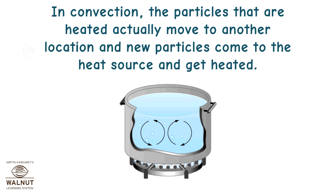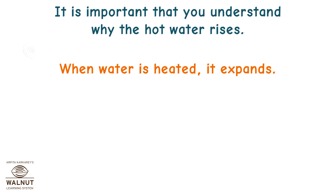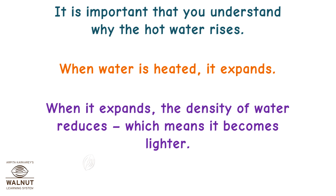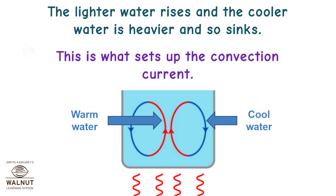In convection, the particles that are heated actually move to another location and new particles come to the heat source and get heated. It is important to understand why hot water rises. When water is heated, it expands. When it expands, the density of water reduces, which means it becomes lighter. The lighter water rises and the cooler, heavier water sinks. This is what sets up the convection current.